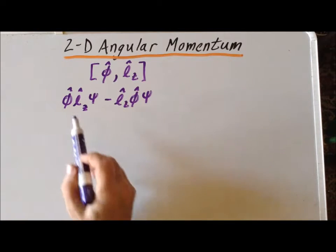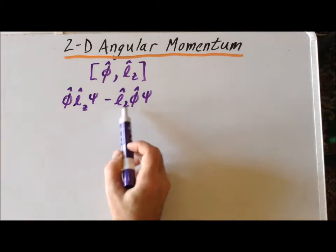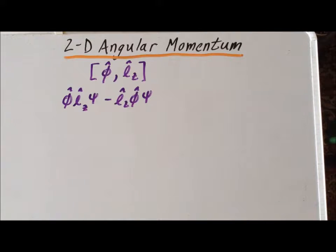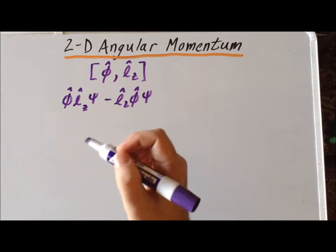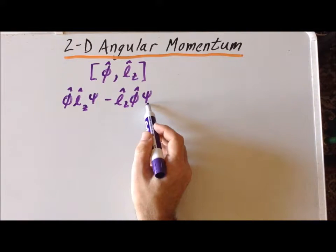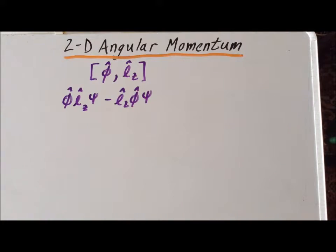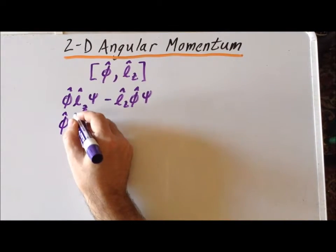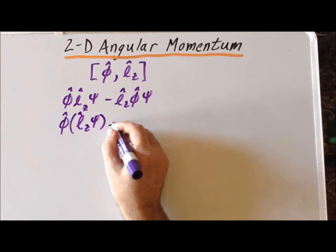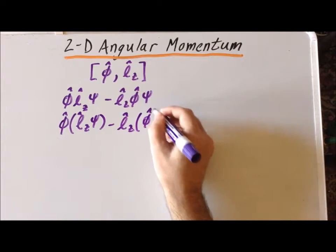So here we have the angle phi times the angular momentum acting upon the wave function, and then we have the angular momentum acting upon the angle acting upon the wave function. By the conventions of quantum mechanics, we operate on the wave function starting from the right — the nearest operator to the wave function acts upon it first. So effectively, the angular momentum in the z direction acts upon the wave function first in the second expression.